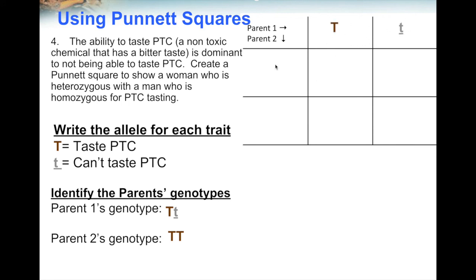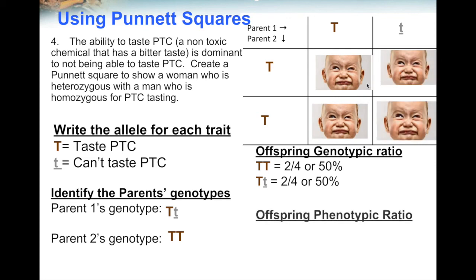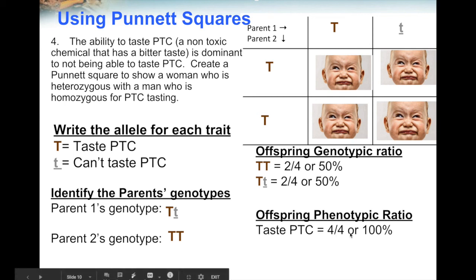Put the genotypes on the outsides of the Punnett square — one parent is heterozygous, the other is homozygous dominant. Fill in each box. For the genotype, two of the four boxes are homozygous dominant or 50%, and two out of four boxes are heterozygous or 50%. Because all boxes have at least one capital T, one dominant allele, the phenotype is able to taste PTC — each box represents the ability to taste PTC. Can taste PTC equals four out of four boxes, or 100% of the time.